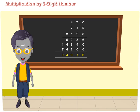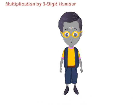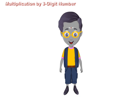Multiplication by 3-digit number. When we multiply a number by a 3-digit number, one more step is needed to find the product. Observe an example where the multiplier is a 3-digit number.